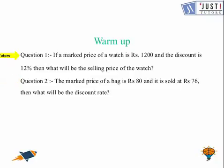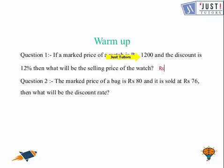Assuming that you have done them, we can discuss the answer now. If the marked price of a watch is Rs. 1,200 and the discount is 12%, then we need to find the selling price. Finding 12% of 1,200 gives us 144. Taking away 144 from 1,200, we get the answer Rs. 1,056.